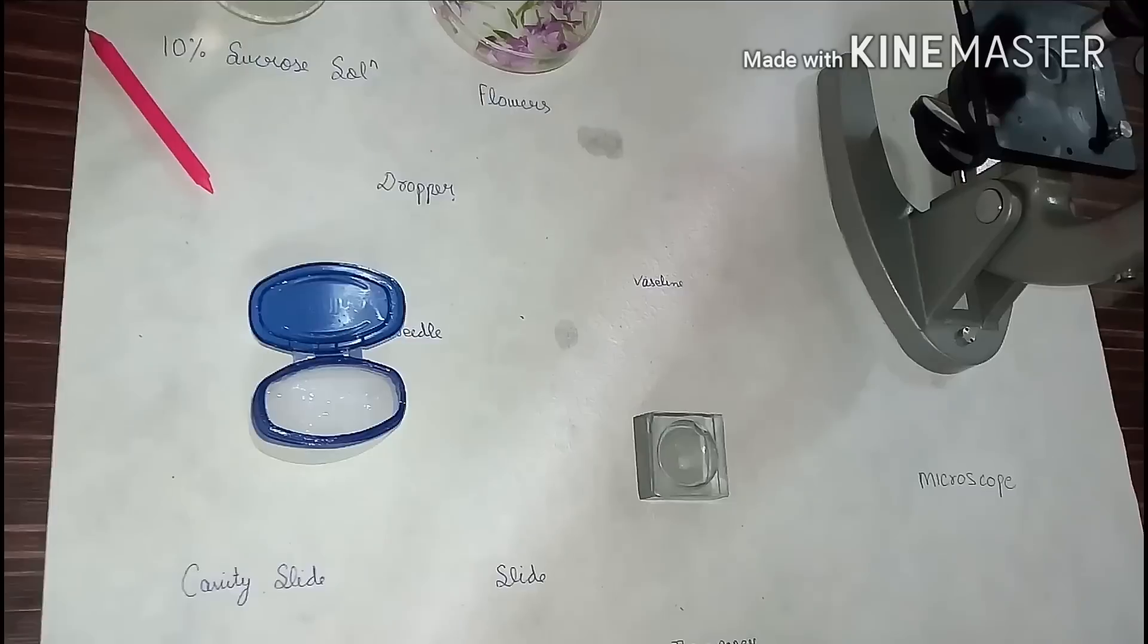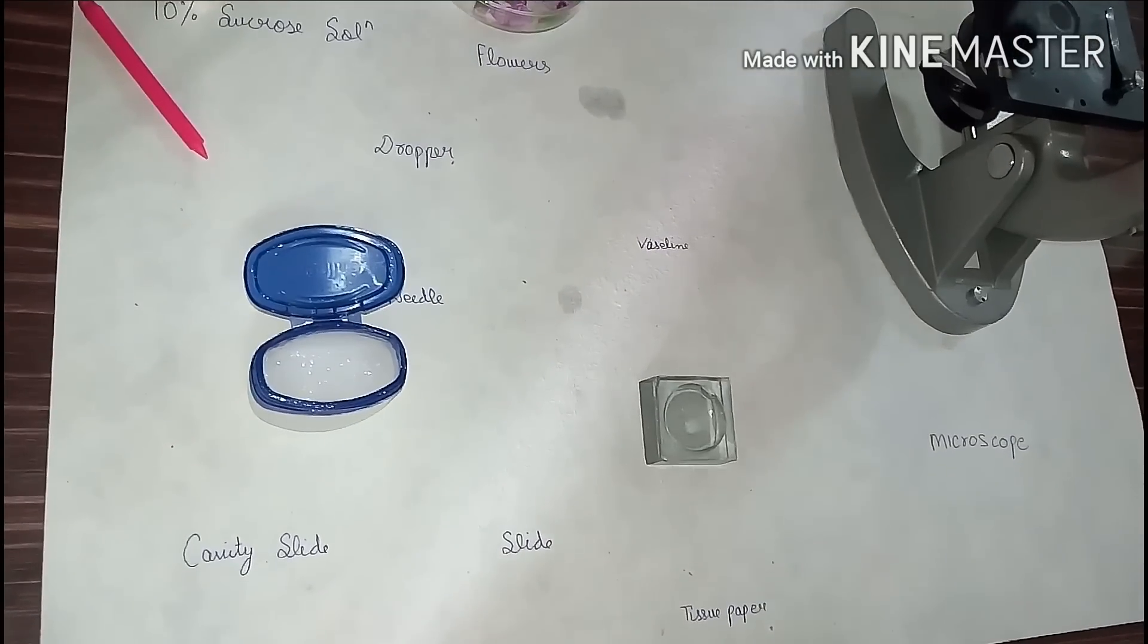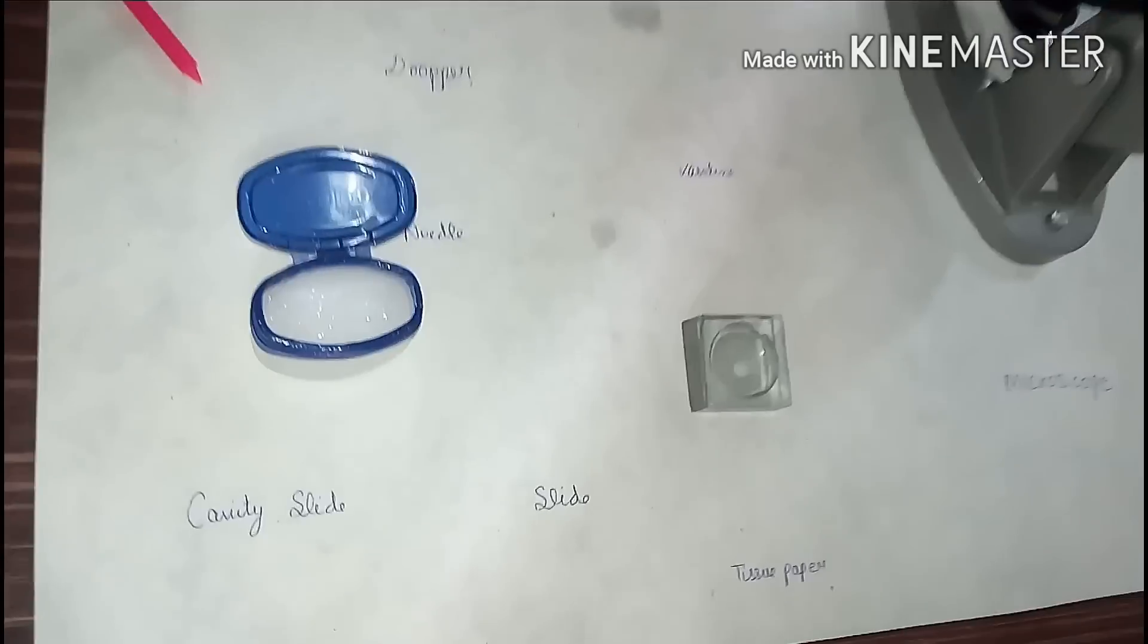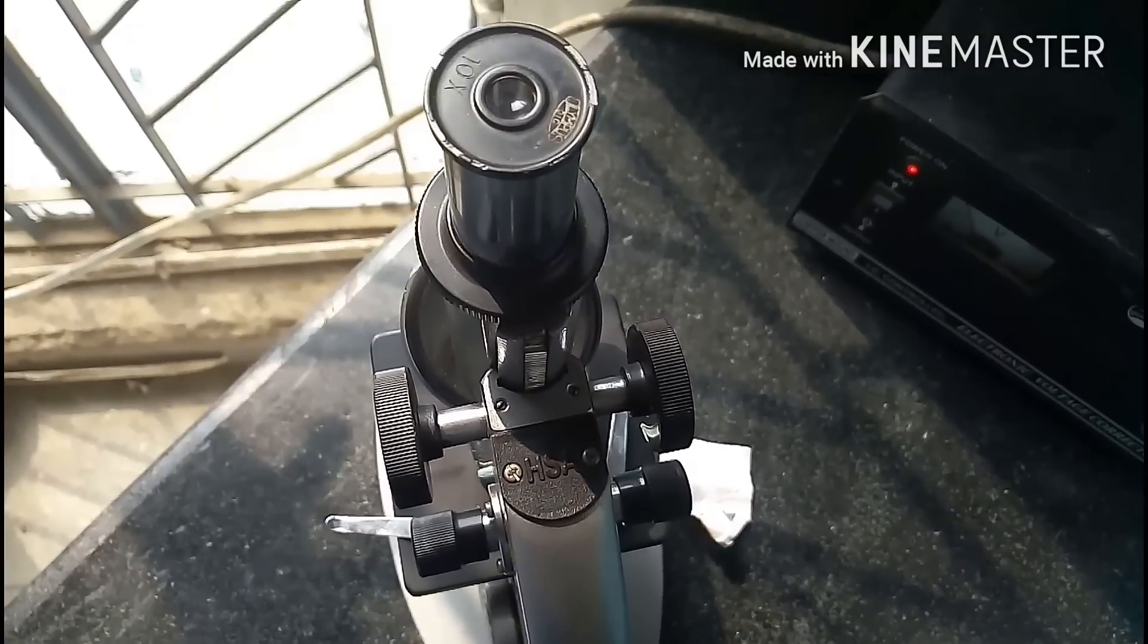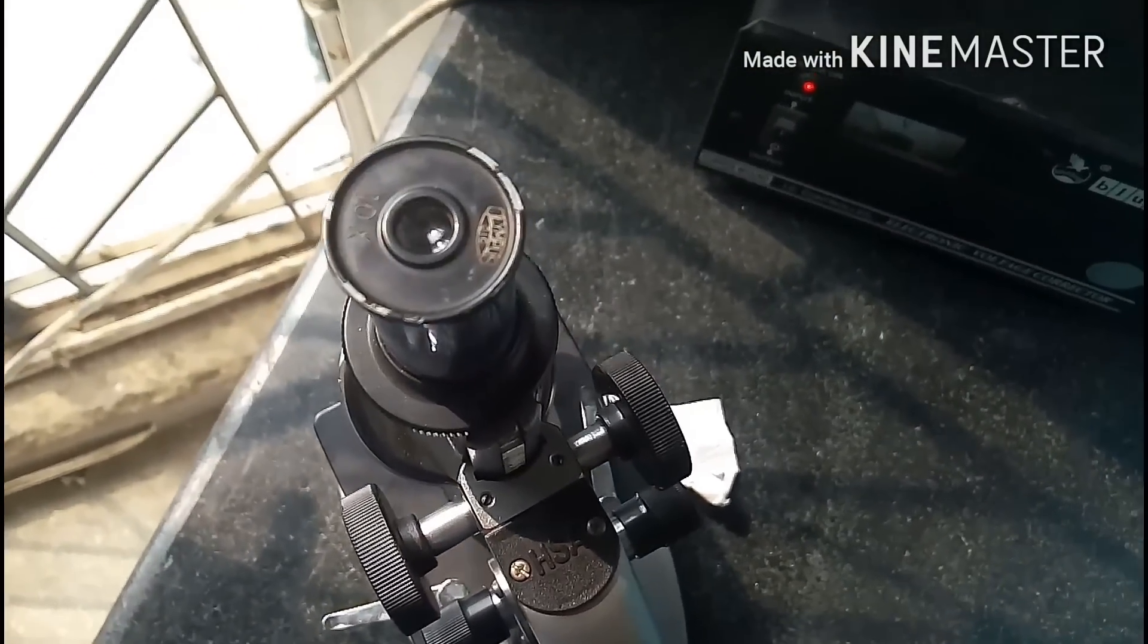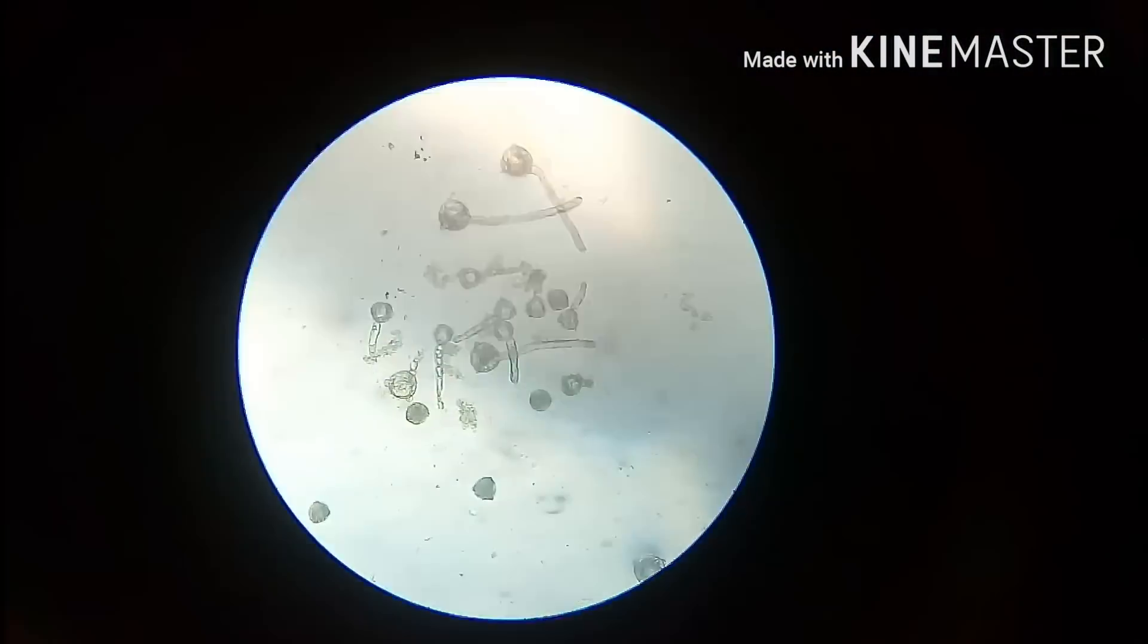Now wait for 10 to 15 minutes or maybe longer for the germination. So it's been 15 minutes from our last step. Let's check how is our germination. See this, lots of germinated pollen grains.